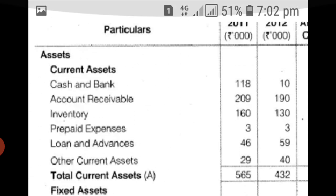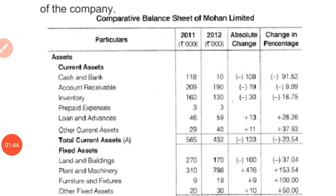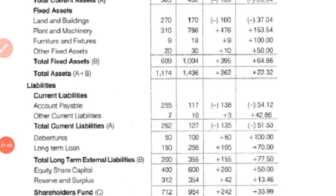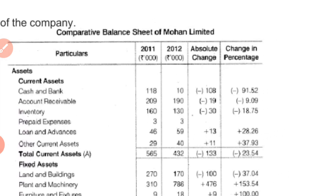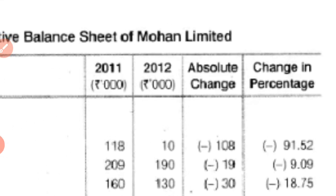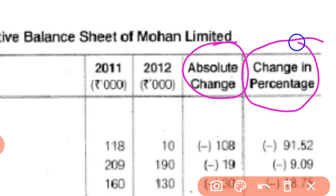Now, if we are given such a balance sheet, how will we prepare a comparative balance sheet? This is how the comparative balance sheet of a company is prepared. To the balance sheet, we have added two more columns: one is the absolute change column — absolute increase or decrease — and the second is the percentage change column.